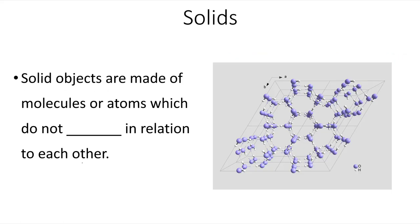Solid objects are made of molecules or atoms which do not move in relation to each other. The molecules are constantly vibrating, but they are not changing their shape or position related to the neighboring molecules.